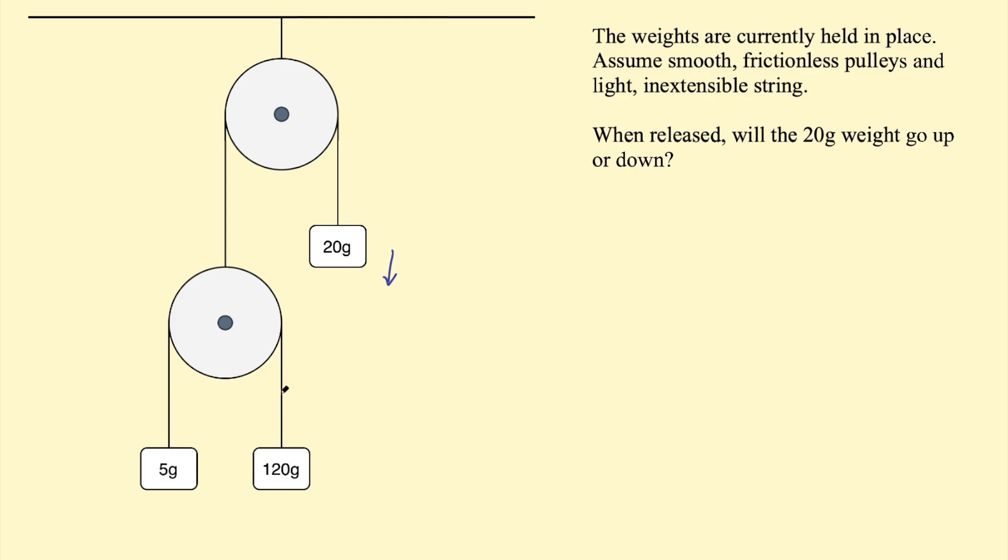So how can we figure out what would happen to this weight? Well, we have to figure out the tension force in this string first, on the lower pulley. How can we figure that out? Well, we can examine the forces acting on these weights. Well, firstly we have a tension force, and that's going to be equal on both sides.